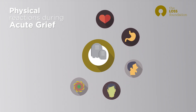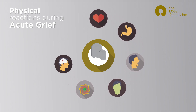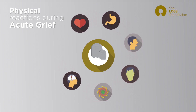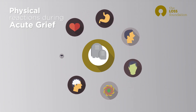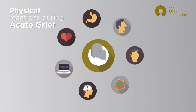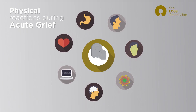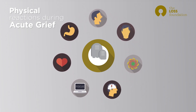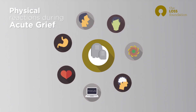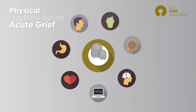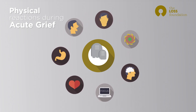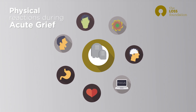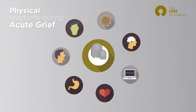In this phase you may have frequently distracting thoughts of your loved one and significant trouble focusing on the things that you would normally have been able to focus on. When we're grieving, our brain is less concerned with paying attention to or remembering day-to-day things, so you may find small tasks much more difficult than you did before.